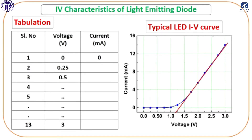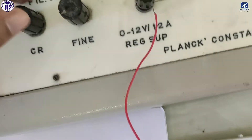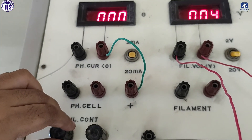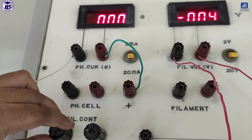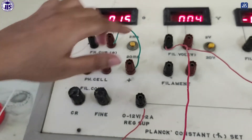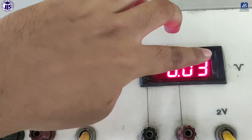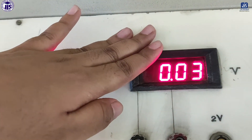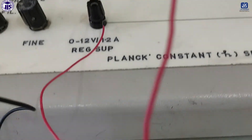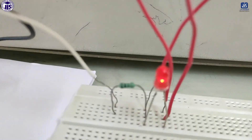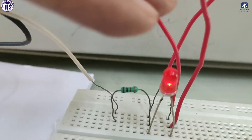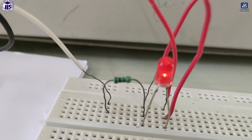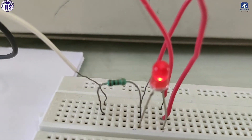Now I am increasing the voltage. After some voltage the LED will start glowing. You will see some voltage shown on the voltmeter — that is 0.03, 0.04 volts — and you can see a minimum light is glowing on the LED. This means there is some current flowing from the N side to the P side. So this is the voltage and this is your current.